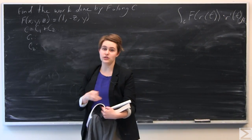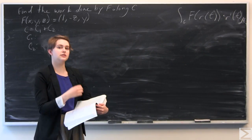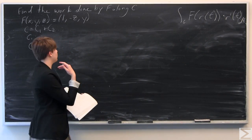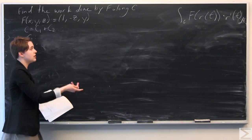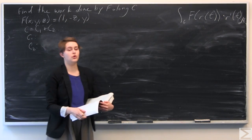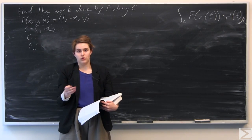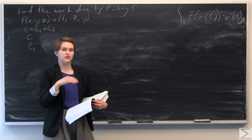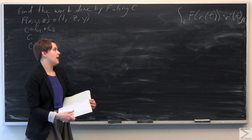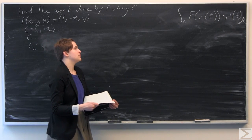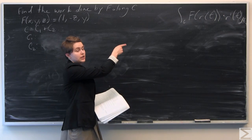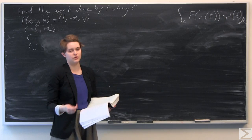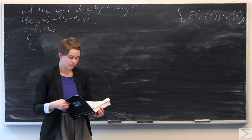We're going to do this piece by piece. We'll first lay out what we're going to do for C1, then C2, and find the parameterization for both, because we need R of T and R prime of T.